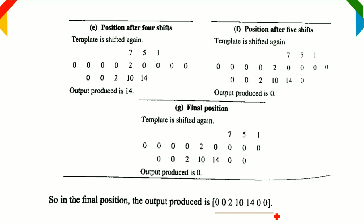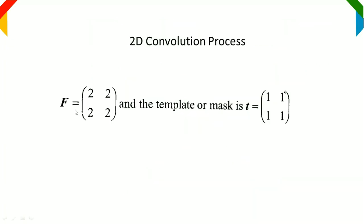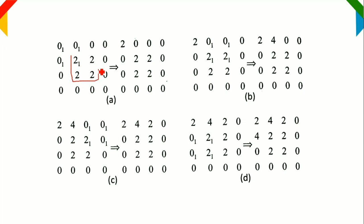Now we will go for the 2D image convolution operation. Here is the image F — the original image is given as all 2s (a matrix of 2s). The template or kernel is given as 1, 1, 1, 1, 1. Based on the kernel size, we have to add zeros to the original image — the zero padding process. We align the kernel values to the original image pixels accordingly, adding zeros around the border.